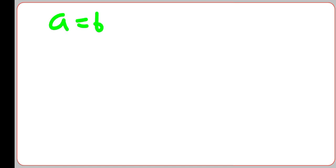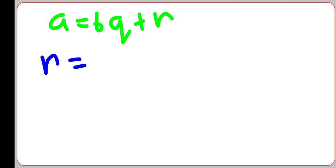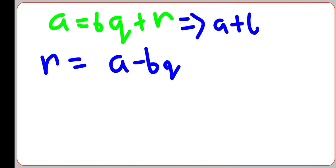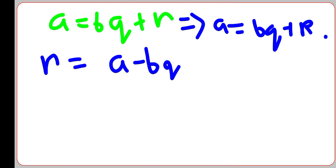We shall now prove the uniqueness of Q and R. To prove uniqueness, we assume there is another pair: A = BQ₁ + R₁, where R₁ ≠ R and Q₁ ≠ Q. Taking A = BQ + R and A = BQ₁ + R₁, we get BQ + R = BQ₁ + R₁. This gives B(Q₁ − Q) = R₁ − R, where R₁ − R = 0. Hence R₁ = R and Q₁ = Q. Therefore, the representation A = BQ + R is unique.